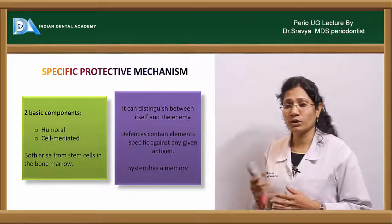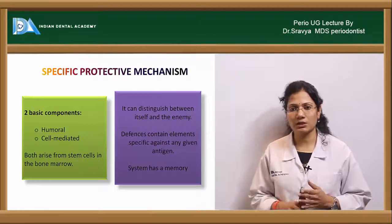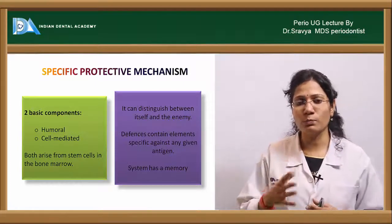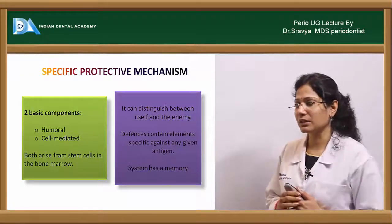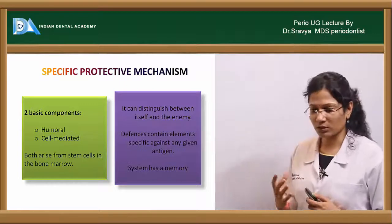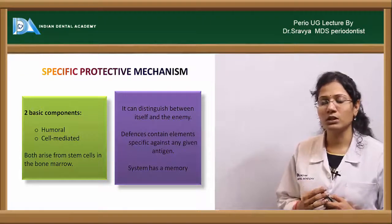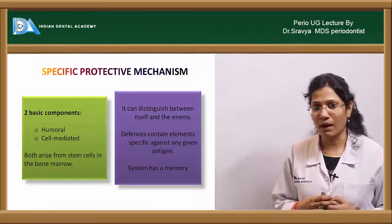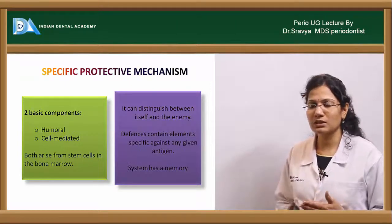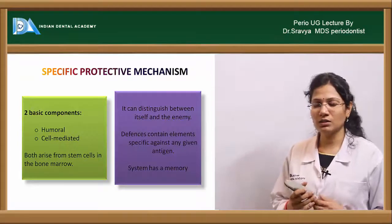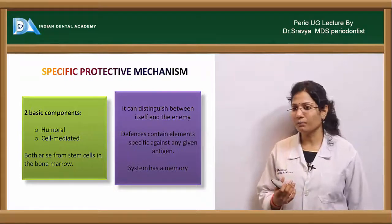The specific protective mechanisms include two basic components: humoral immunity and cell-mediated immunity. The cells responsible for bringing about this immune response are both produced within the bone marrow from hematopoietic stem cells. These hematopoietic stem cells give rise to T lymphocytes for cell-mediated immunity and B lymphocytes for humoral immunity.